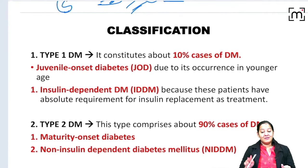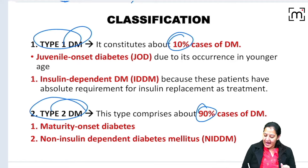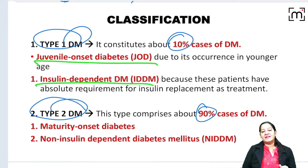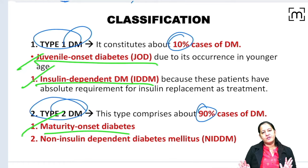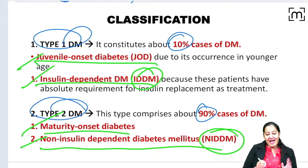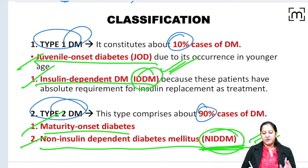There are two types of diabetes: Type 1 and Type 2. Type 1 is only 10% of cases and is known as juvenile onset diabetes or insulin dependent diabetes mellitus (IDDM) because the only treatment is insulin replacement. Type 2 is 90% of cases, is maturity onset (usually diagnosed after age 40-50), and is known as non-insulin dependent diabetes mellitus (NIDDM). In Type 2, treatment starts with dietary modification, lifestyle changes, and oral hypoglycemic agents, with insulin used as a last resort.